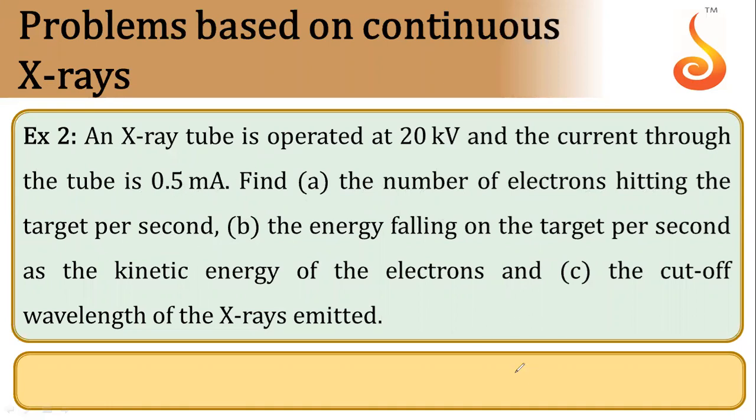Now we know current is charge flowing per unit time. So let's say n number of electrons are hitting the target per second. Total charge which is hitting target per second will be n into e divided by time.